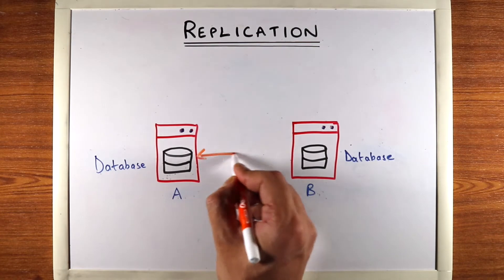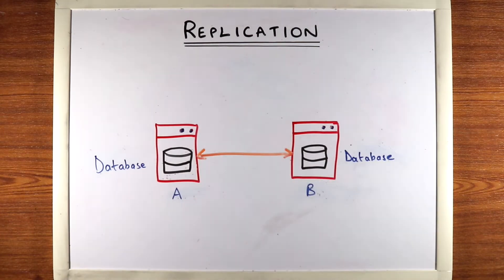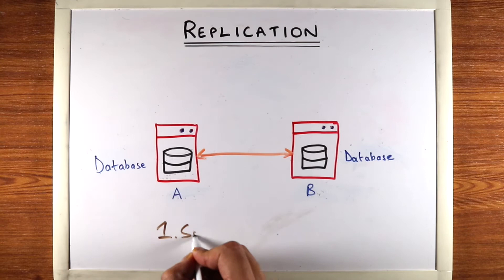So how do we synchronize the data between these two machines? There's two ways to do this. The first is synchronous replication and the second is asynchronous replication.